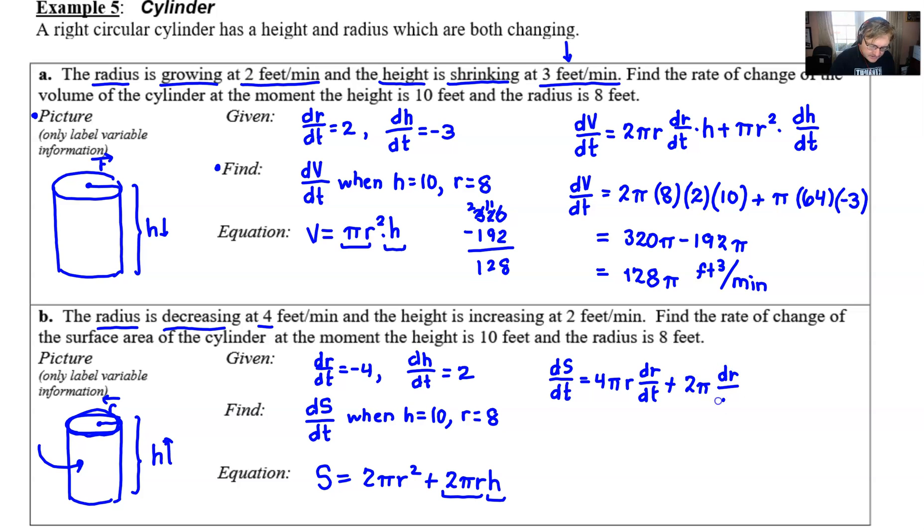So the derivative of 2πr is 2π, tack on the dr/dt, multiply by h, add to that the 2πr, and then if you multiply by the derivative of the h, you've completed your product rule. So obviously a lot of things that have to be accounted for here in this dS/dt equation, and we're going to start plugging in what we know.